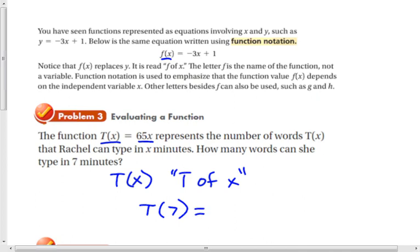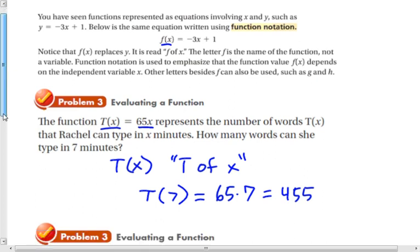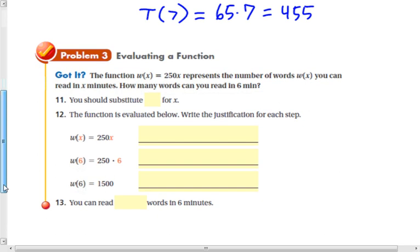And t of 7 is equal to 65 times 7, which is 455. So she can type 455 words in 7 minutes. Alright, I'm going to let you try that.